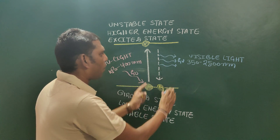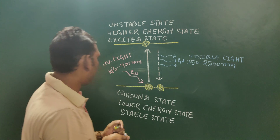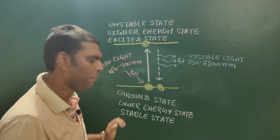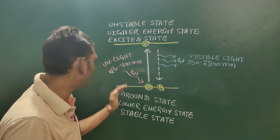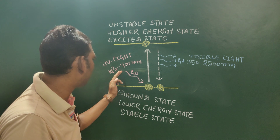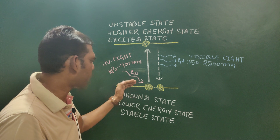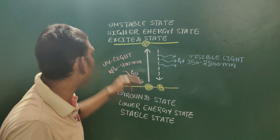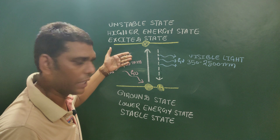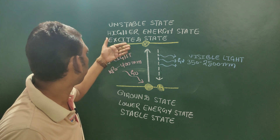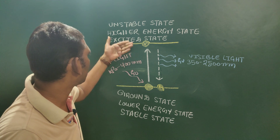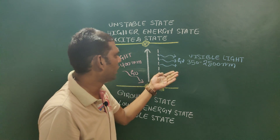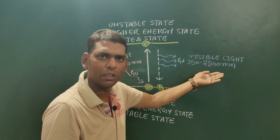To explain the overall process again: the molecule in its ground state absorbs radiation of shorter wavelength, leaves the ground state, reaches an excited state, and from the excited state starts coming back to the ground state by emitting radiation of longer wavelength.